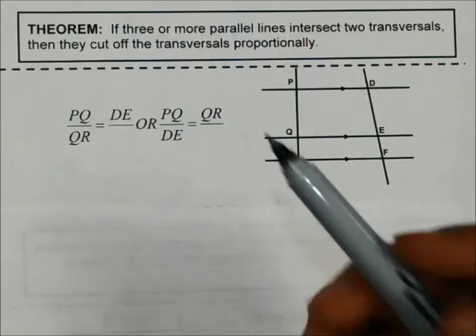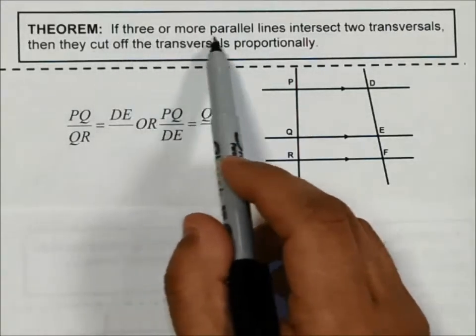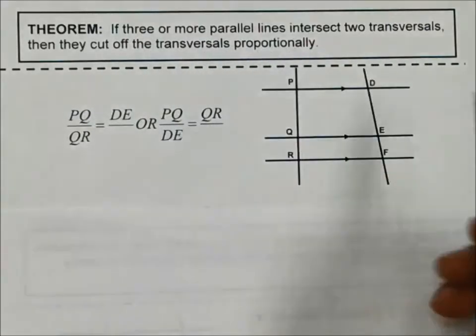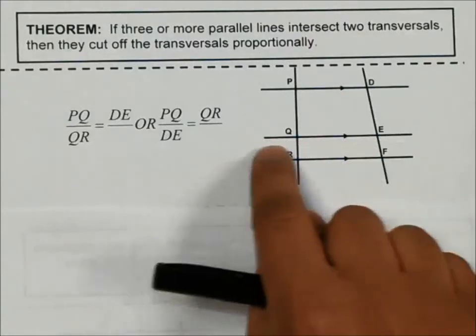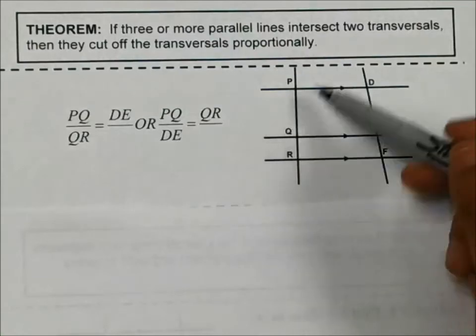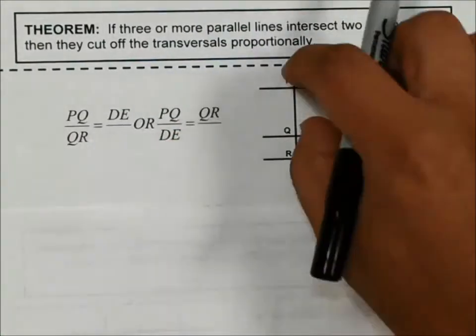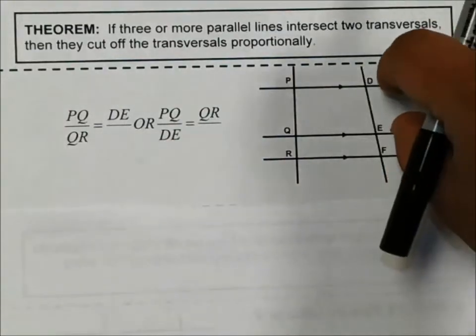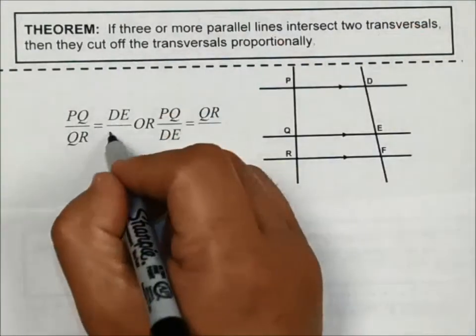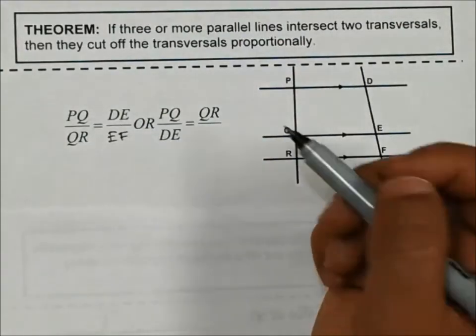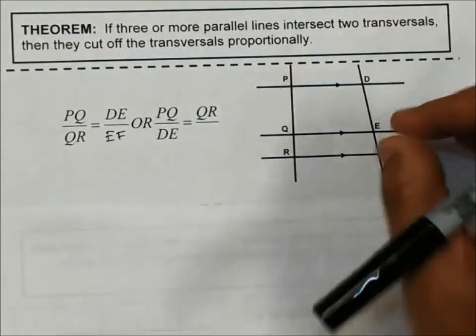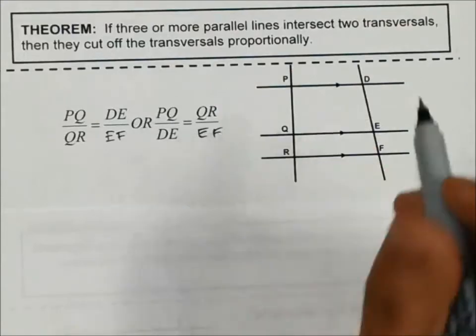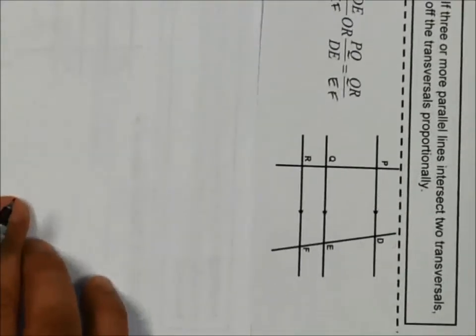This next theorem is similar to the one we did at the beginning. If three or more parallel lines intersect two transversals, then they cut off the transversals proportionally. So this middle or in-between line right here, it cuts this proportionally. That means PQ over QR, this piece over this piece is going to be proportional to DE over EF. We could also set it up as PQ over DE equals QR over EF. It's like me turning the picture sideways and setting up the proportions going this way.